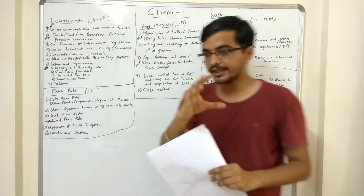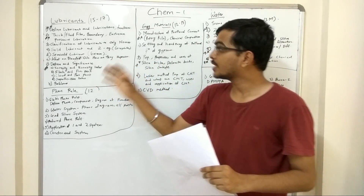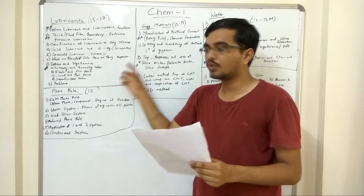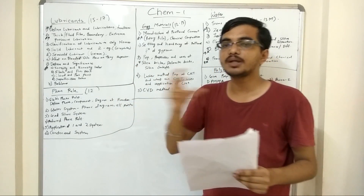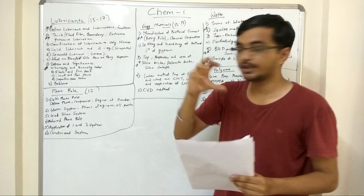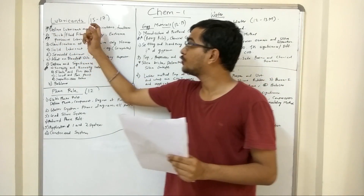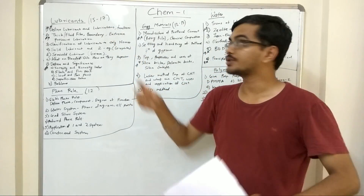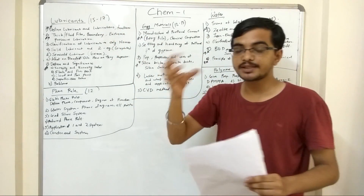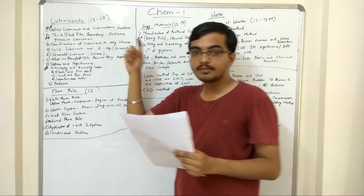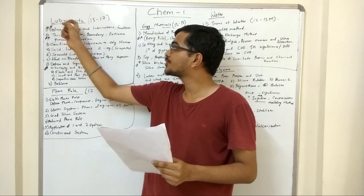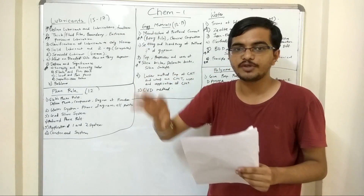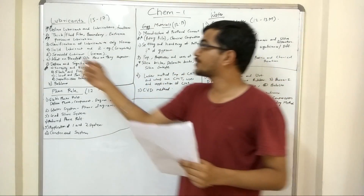Let's start with lubricants - a simple chapter, not very difficult. You can fetch around 15 marks in this chapter. The questions that are important are: define lubricants and lubrication, and state its function. Function can itself come for a 3-mark question, or it can come together with defining lubricants and lubrication. This function is generally seen in every paper.